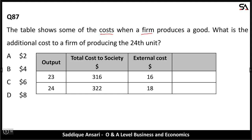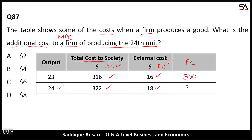Next: the table shows some of the costs when a firm produces a good. What is the additional cost — marginal cost — to the firm? We need to calculate the marginal private cost of producing the 24th unit. Total cost to society is social cost, and external cost is given. Private cost is the difference: 316-16=300 and 322-18=304. Marginal private cost of the 24th unit is 304-300=4. Option B is the correct answer.